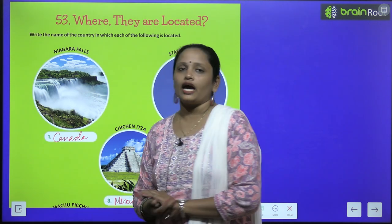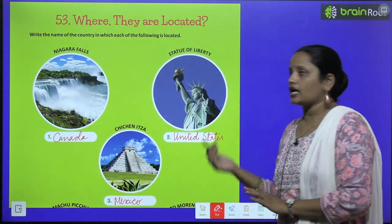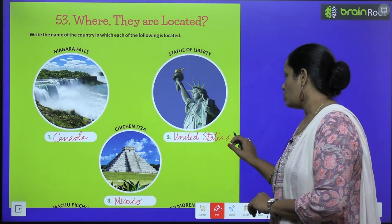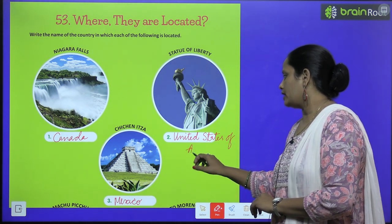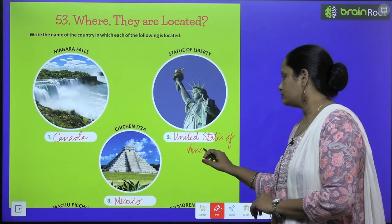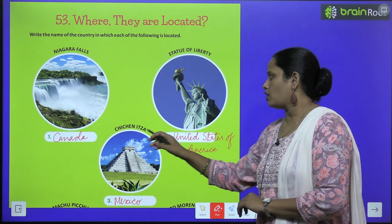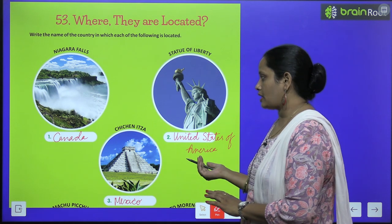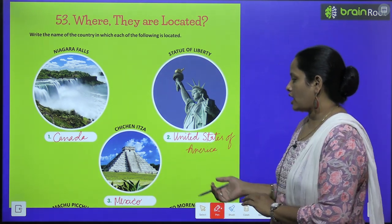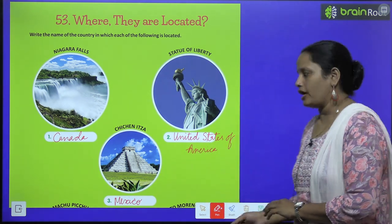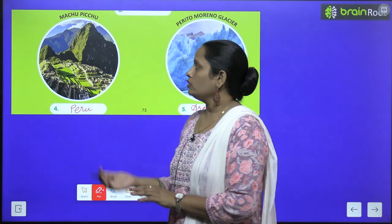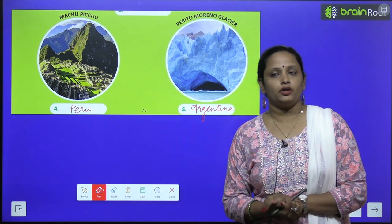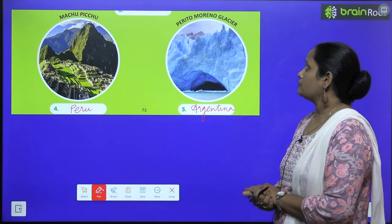The first is located in Canada. Second, the Statue of Liberty — it is located in the United States of America. Next picture is of Chichen Itza — it is located in Mexico. Next is Machu Picchu — it is located in Peru.